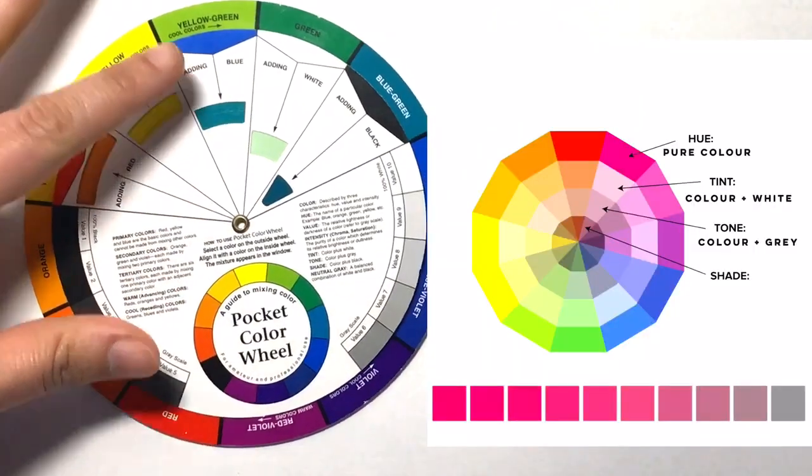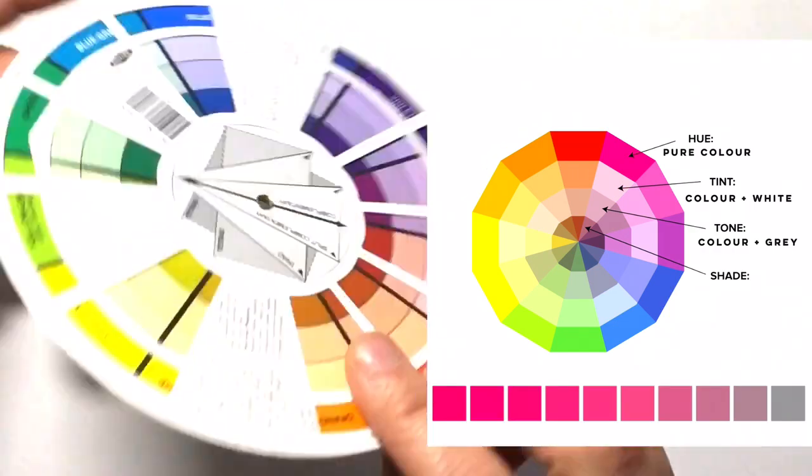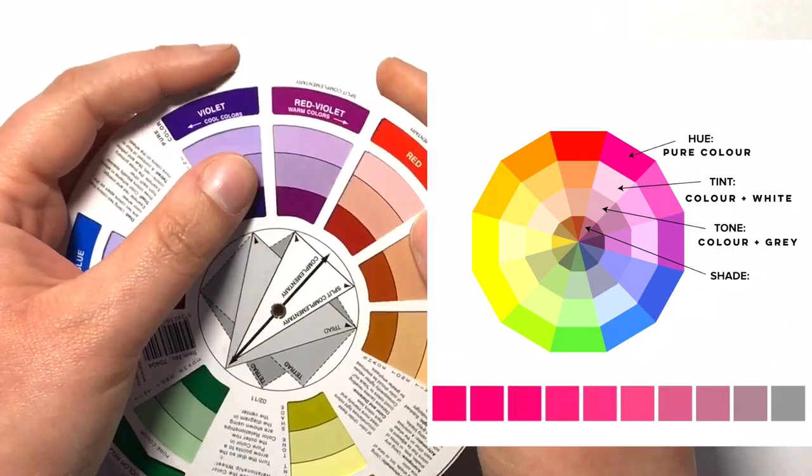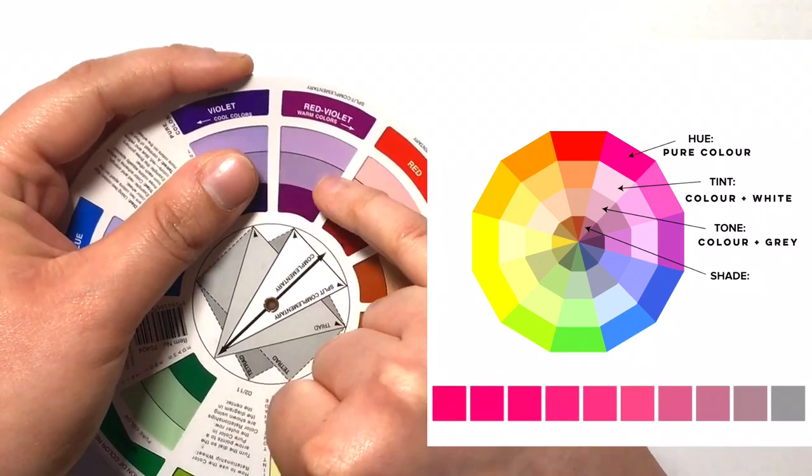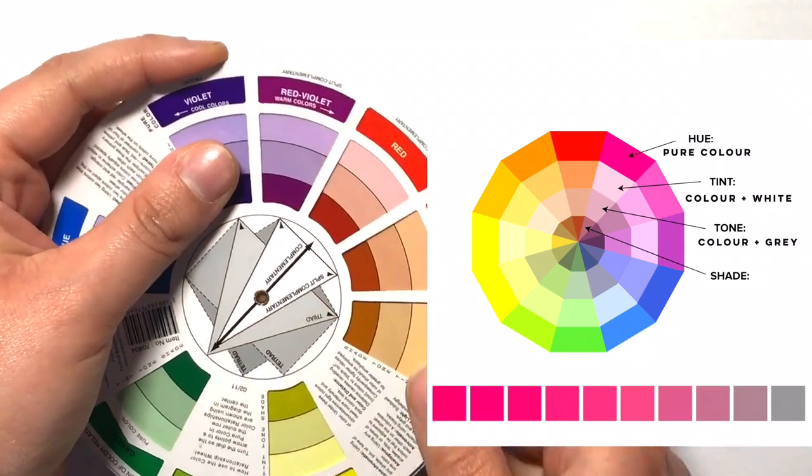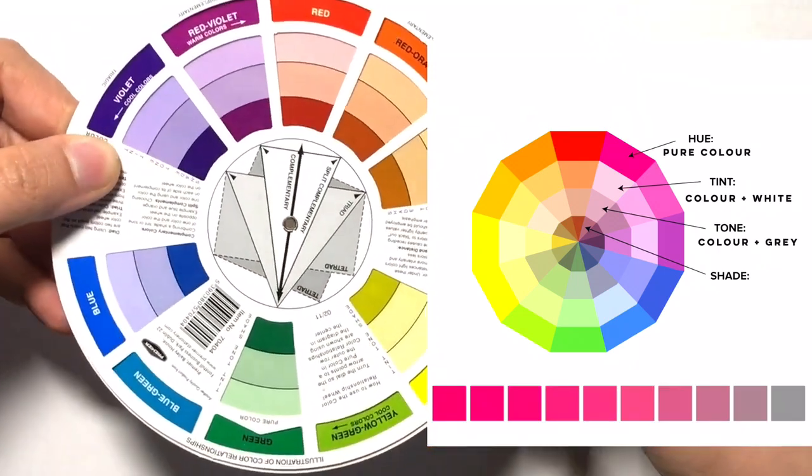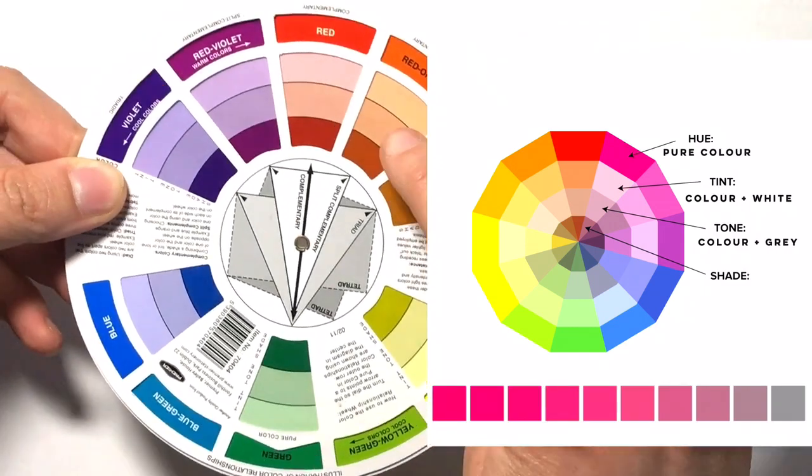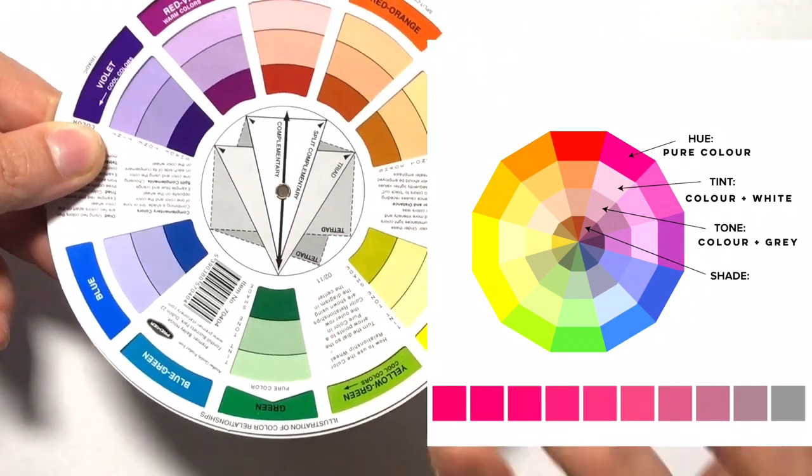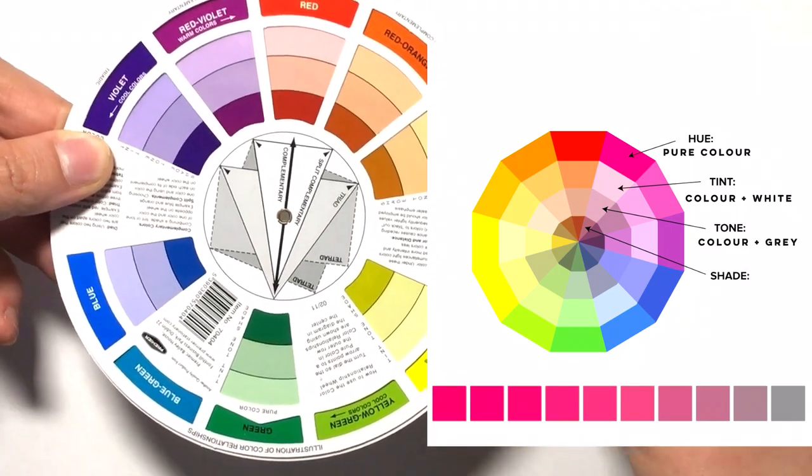Now tones are created when you add gray to a color. As you can see from the central section on each of these colors, so we're looking at this whole section here and then the central panel here, you can see that these are the tones and they're all quite dull. It really dulls the color when you add gray, so it desaturates the color, and that's how we identify tones. It's a color whose intensity has been literally toned down by adding gray.